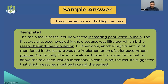Here's an example using template one: 'The main focus of the lecture was the increasing population in India. The first crucial aspect revealed in the discourse was illiteracy, which is the reason behind overpopulation. Furthermore, another significant point mentioned in the lecture was [next phrase]. Additionally, the lecture also exhibited important information about the role of education in schools. In conclusion, the lecture suggested that strict measures must be taken.' You can take a screenshot of this to help you while preparing.